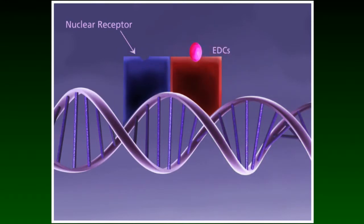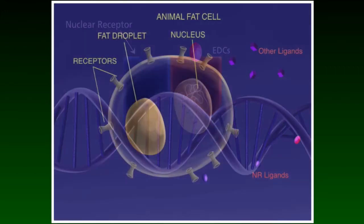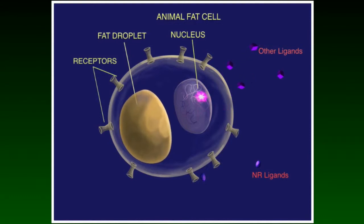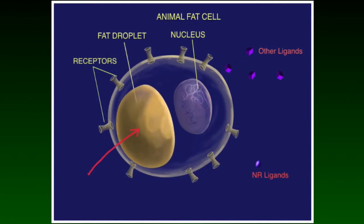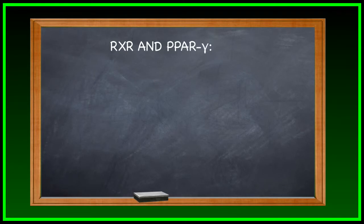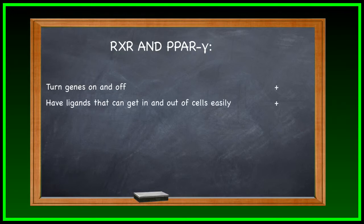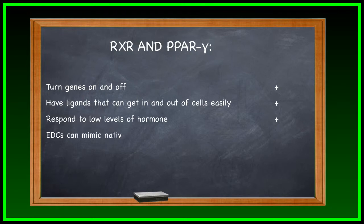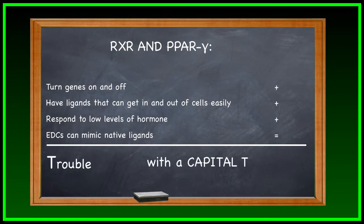EDCs that activate or inactivate RXR and PPAR gamma at the wrong time during development can disturb adipogenesis. This tells us right off the bat that it might be a little easier than we would like to disturb lipid homeostasis, leading to increased weight. So here we have two receptors, RXR and PPAR gamma, that when bound to a ligand, turn genes on or off directly. The ligands, because of their composition, are able to get in and out of cells freely, and they respond to low levels of hormones. There are several chemicals in the environment that will also bind to RXR and PPAR gamma. What we have here is a recipe for trouble.